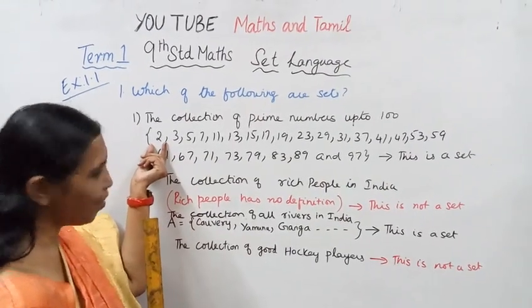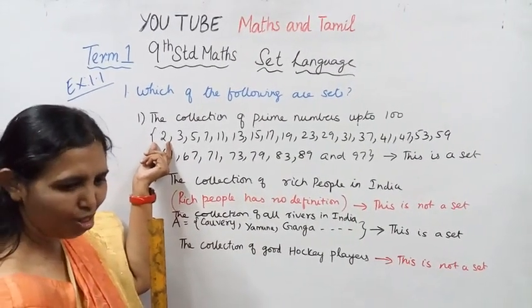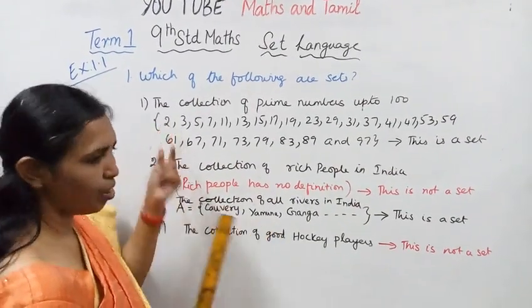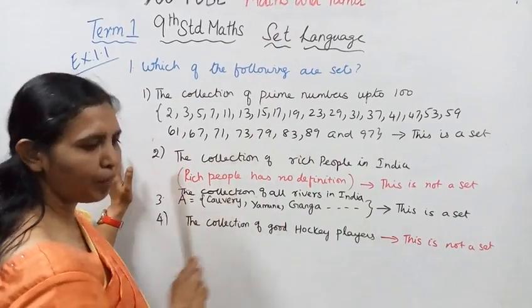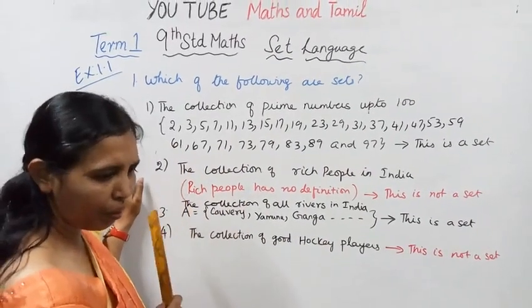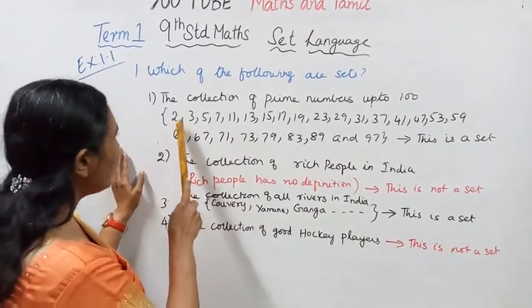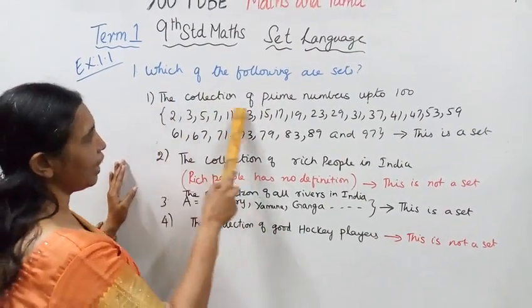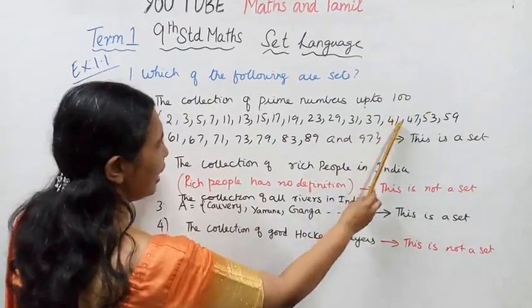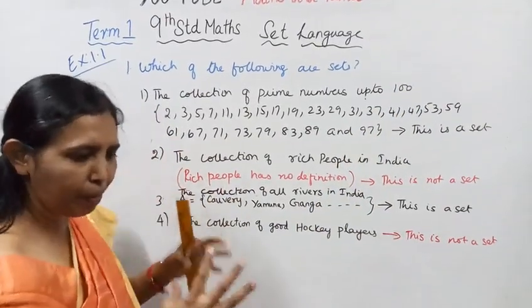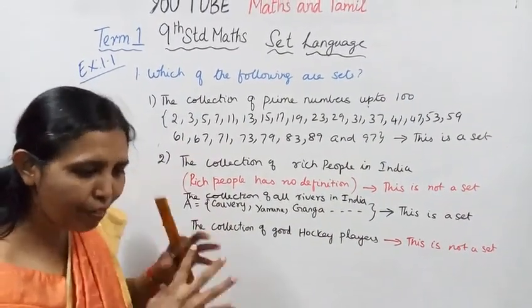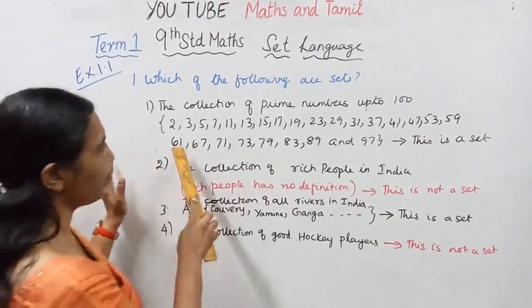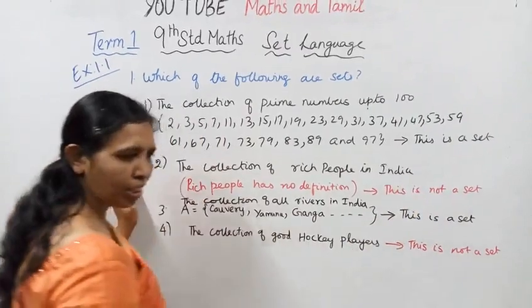Two is the only even prime number; all other prime numbers are odd. The collection of prime numbers up to 100 is well-defined. Therefore, this is a set.